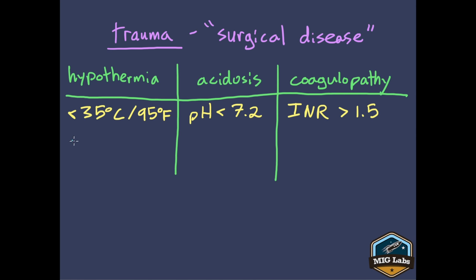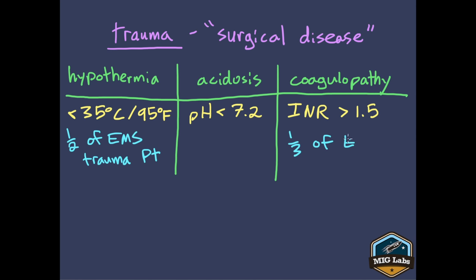One study showed that half of all trauma patients brought in by EMS were hypothermic when they arrived at the hospital — half of our trauma patients are hypothermic when we roll through those hospital doors. Similarly, a third of our trauma patients are coagulopathic. Big numbers. A lot of our patients are suffering from hypothermia and coagulopathy, and acidosis as well, though specific arrival data on acidosis is less clear.